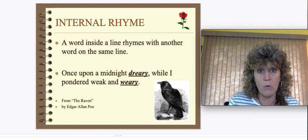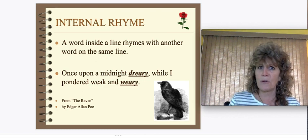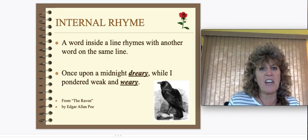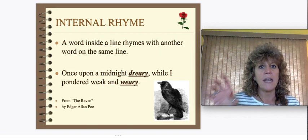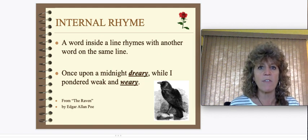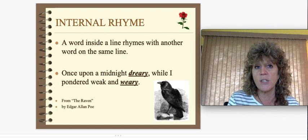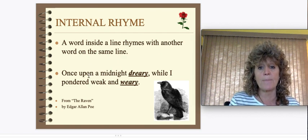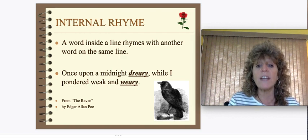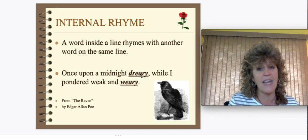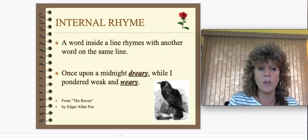"The Raven" by Edgar Allan Poe is a creepy poem — he just talks about this raven watching him, and his quote is "the raven, nevermore" and it keeps saying that at the end of all his lines — a good example of repetition. Weary and dreary rhyme, but it's called internal because they're within the first line, not at the end. So internal means inside.